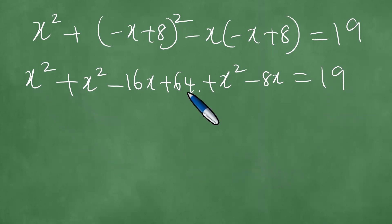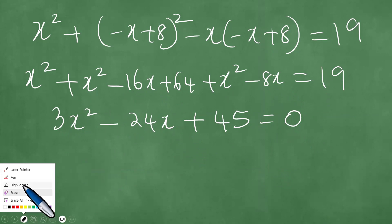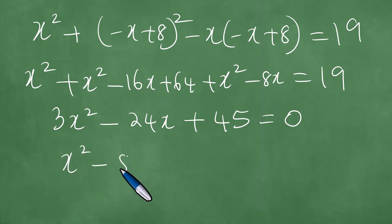So now we have x², x², and x², which is 3x². We have -16 minus 8, which is -24x. And then we have exactly 64, 64 minus 19, which gives us 45, and the result is zero. We divide through by three. Dividing through by three, we get exactly x² - 8x + 15, and the result is zero.